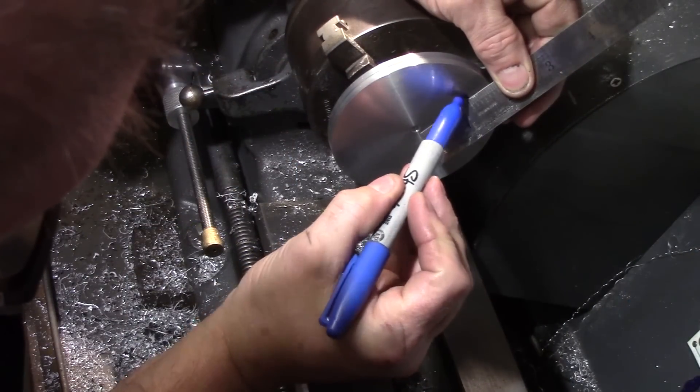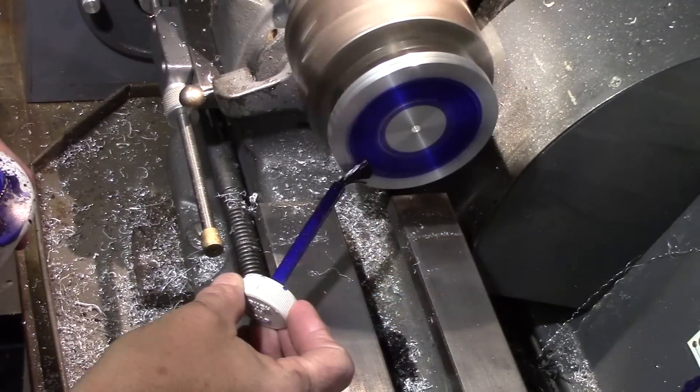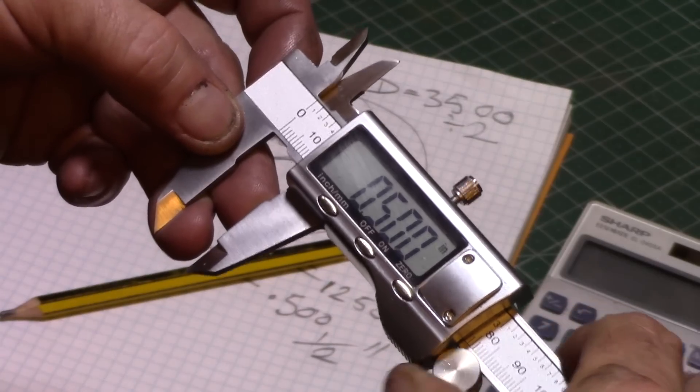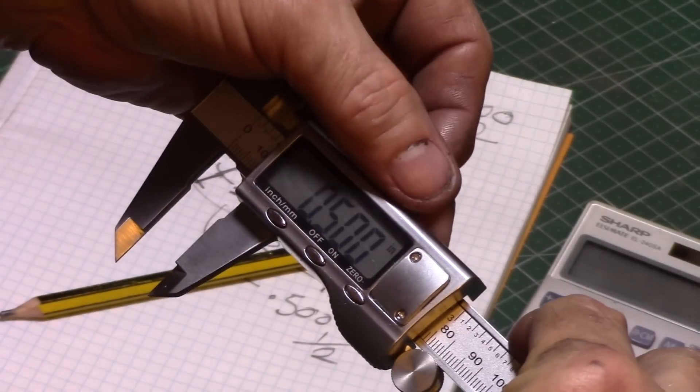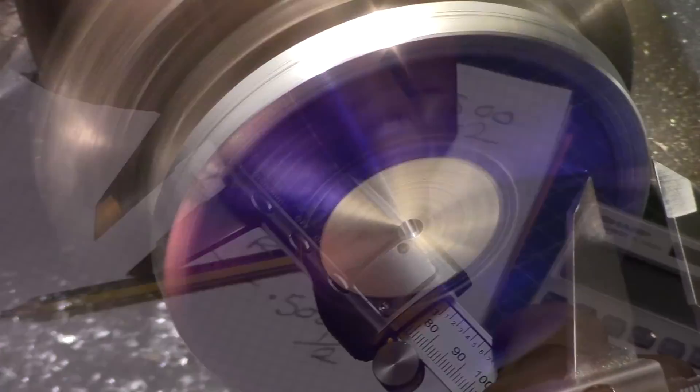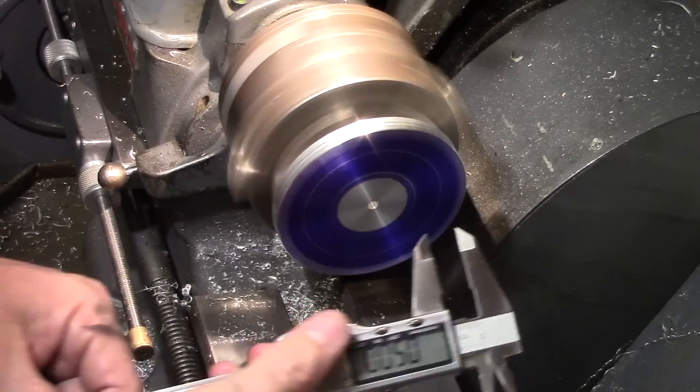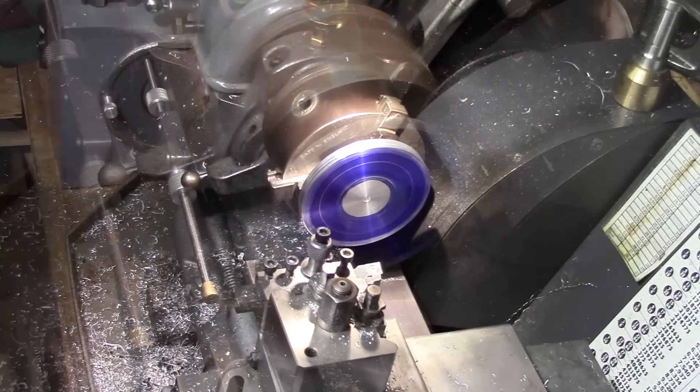And I set my calipers to exactly half an inch to use as a scribe. That looks good, so I'll lock it off at that. I can now carefully use the caliper as a scribe, working gently off the edge of the disc to mark the pitch circle diameter into the bluing.